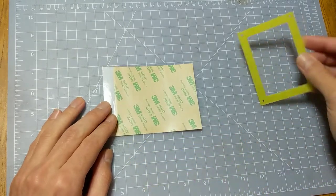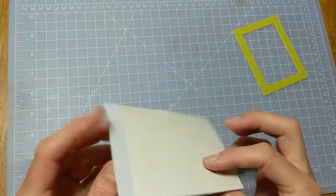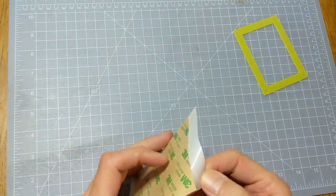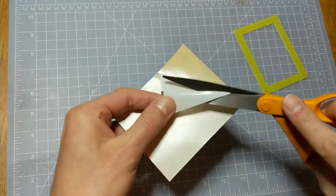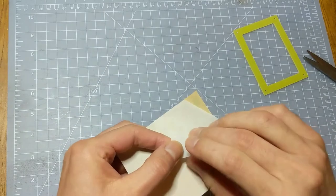So we'll peel off the backing, and one trick here is to use a little scrap piece of the backing as a tool for handling, otherwise the adhesive is pretty sticky and hard to handle.